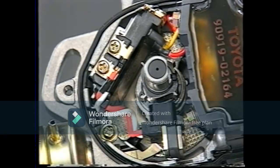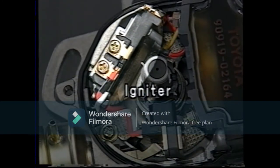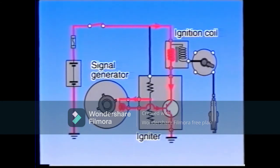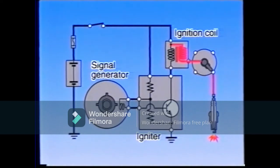These changes in the EMF cause the igniter to switch the primary current on and off. When the engine is running and one of the signal rotor's teeth approaches the pickup coil, a voltage is generated. The base current flows in the transistor, the transistor switches to on, and the primary current flows in the coil. When the signal rotor's tooth is aligned with the pickup coil, the voltage generated in the pickup coil decreases and the transistor is turned off, cutting off the primary current and generating a high voltage in the secondary coil.